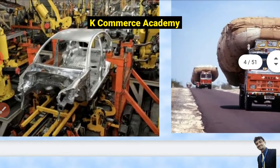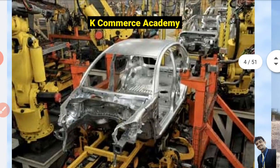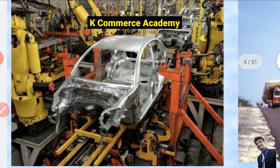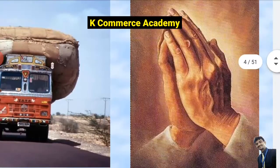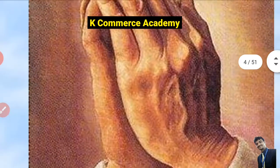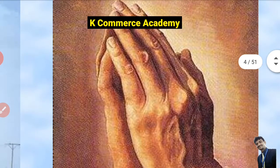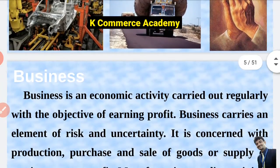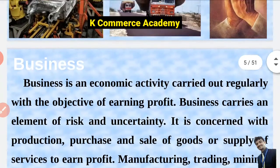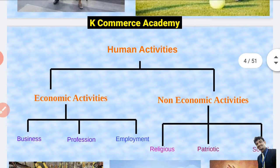Now you can see the picture. In this picture, in a company, a car is being manufactured — which kind of activity do you think it is? Obviously it is an economic activity because the businessman will earn money. Here a transport company is transporting goods — it is an economic activity because the transport company will earn money for this. Here a person is worshipping god — it will be a non-economic activity, a religious activity falling under the non-economic category, because for worship we do not get any money.